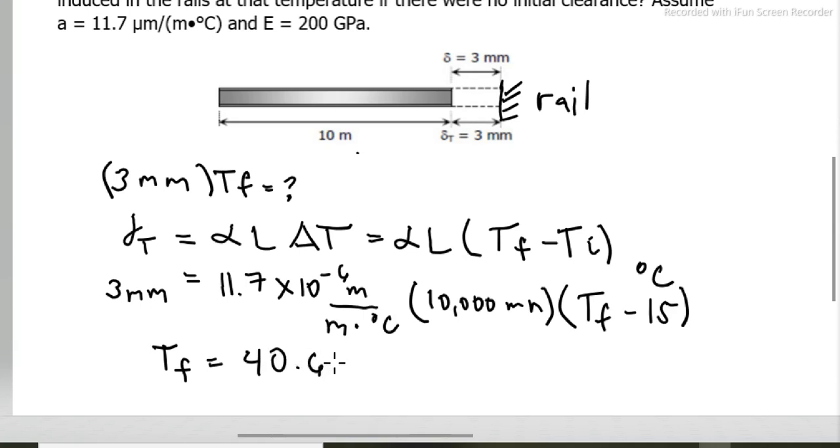40.64 degrees Celsius. What you'll get here is this term: 3 mm divided by 11.7 times 10 to the negative 6 divided by 10,000, approximately 25, then add 15, giving 40.64 degrees Celsius.